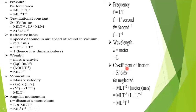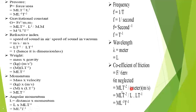We work on the coefficient of viscosity. The formula is force upon 6πrv. Since 6 and π are numbers, we neglect them, leaving F over rv. Force dimension is MLT⁻², distance r is capital L, and velocity v is meter per second with dimension LT⁻¹. Solving L times L gives L², so the denominator is L²T⁻¹, and the final answer for the coefficient of viscosity is ML⁻¹T⁻¹.